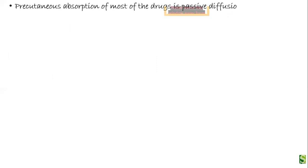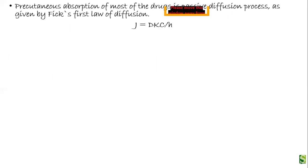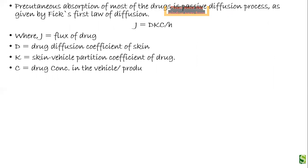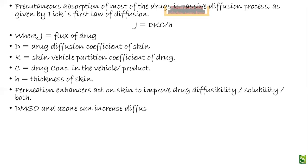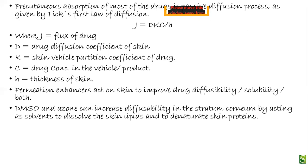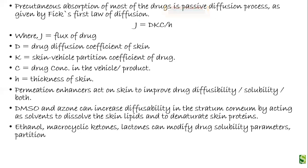Percutaneous absorption of most drugs is a passive diffusion process as given by Fick's first law of diffusion. Fick's law states: J = DKC/H, where J is the flux of the drug, D is the drug diffusion coefficient in the skin, K is the skin-vehicle partition coefficient of the drug, C is the drug concentration in the vehicle or product, and H is the thickness of the skin. Permeation enhancers act on the skin to improve drug diffusibility, solubility, or both. DMSO and azones can increase diffusibility in the stratum corneum by acting as solvents to dissolve skin lipids and denature skin proteins. Ethanol, macrocyclic ketones, and lactones can modify the drug solubility parameters, partition coefficient from vehicle to skin, and permeability coefficient in the skin.